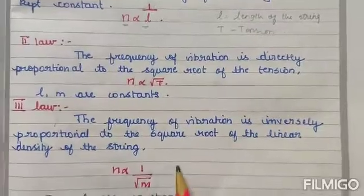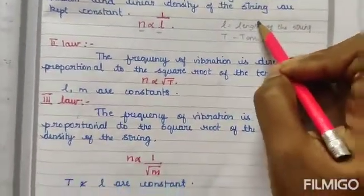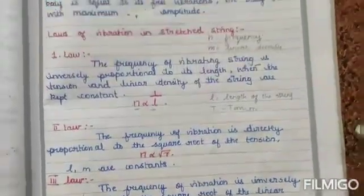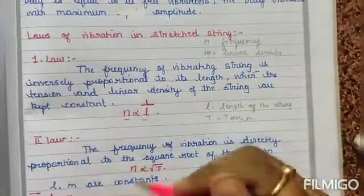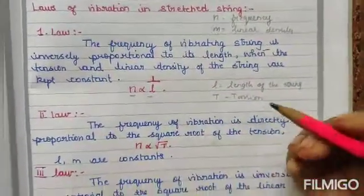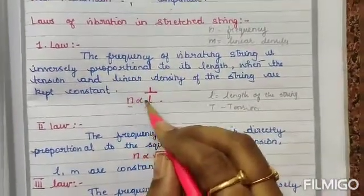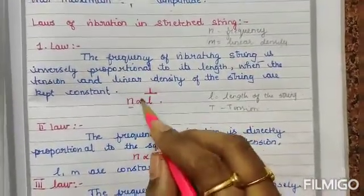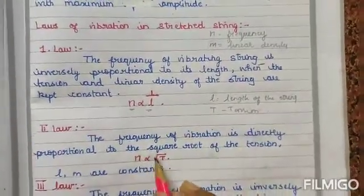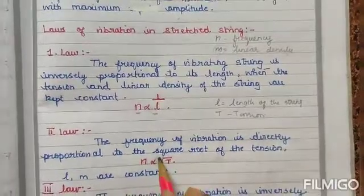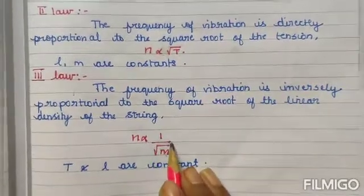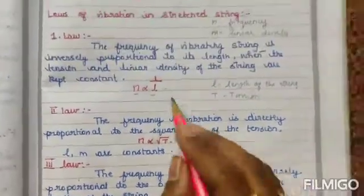For the Third Law, there is a division sign, so frequency is inversely proportional to the square root of M, where M is linear density. So repeating: the Law of Vibration of a Stretched String has 3 laws. First, n is inversely proportional to length of the string.